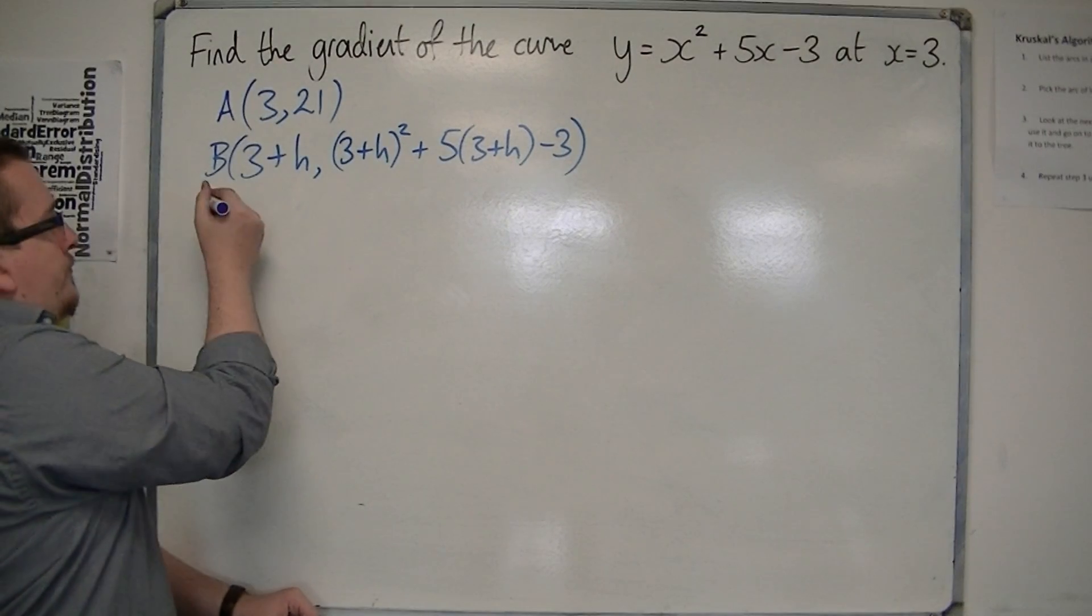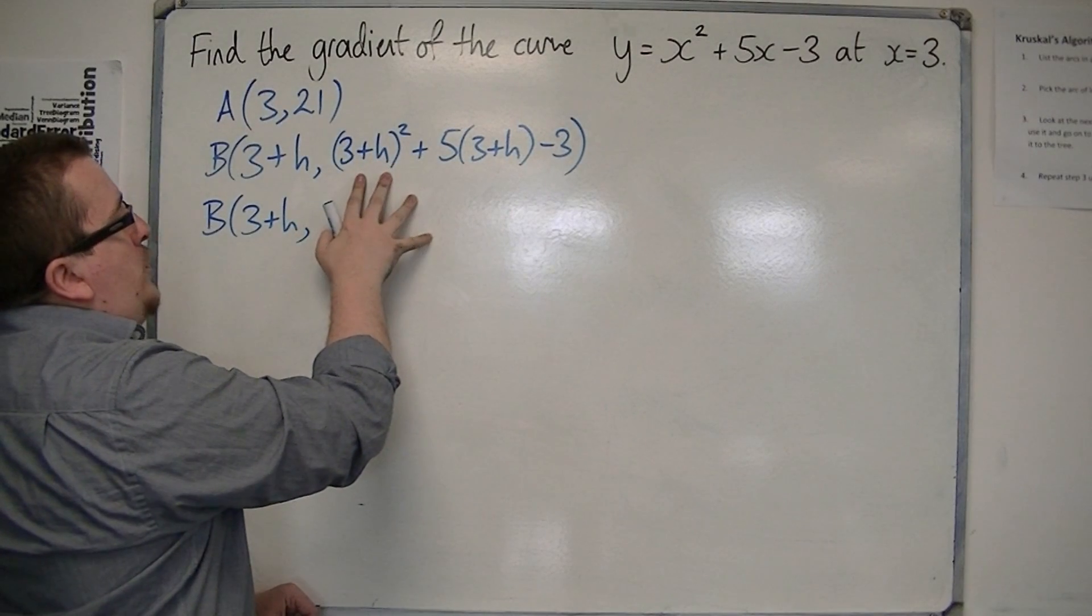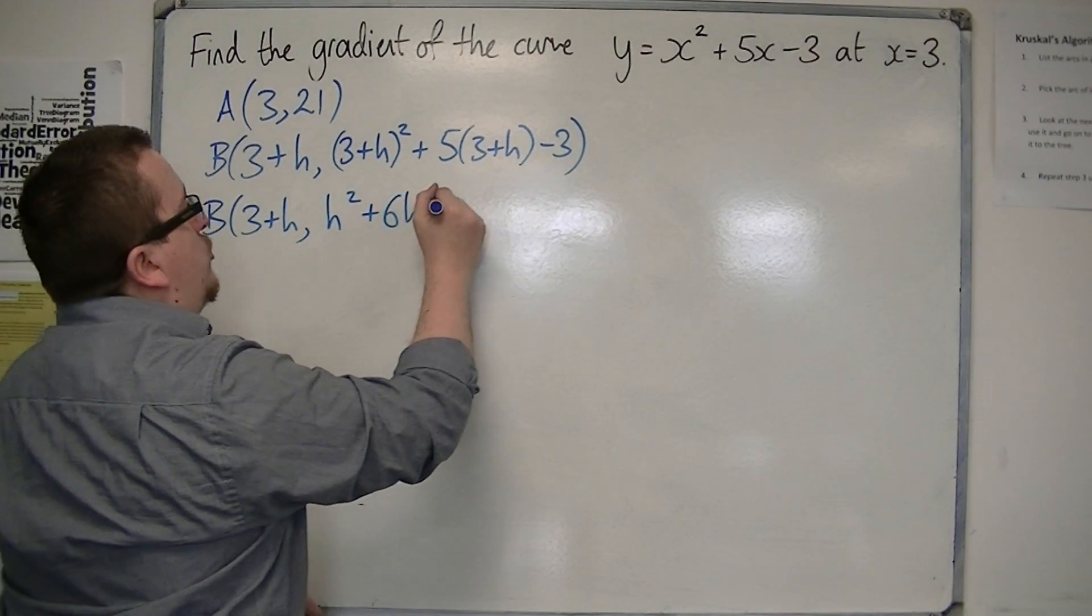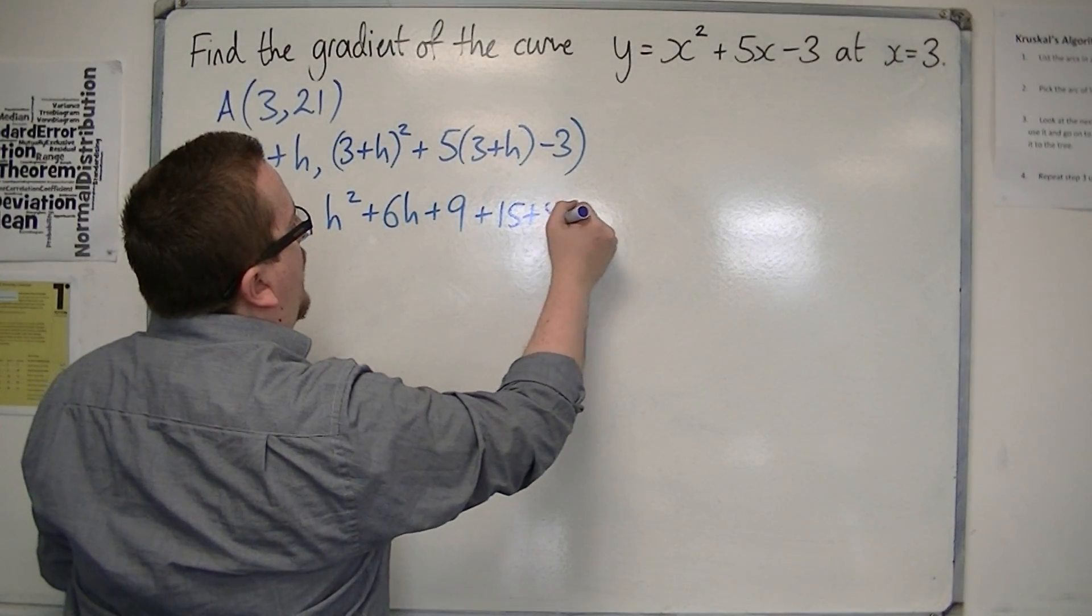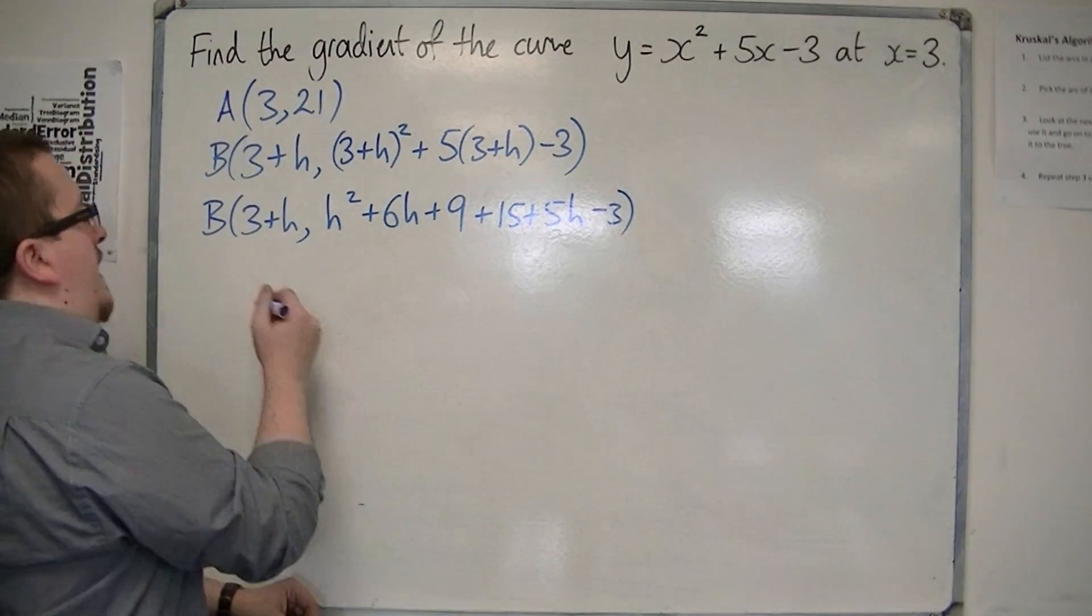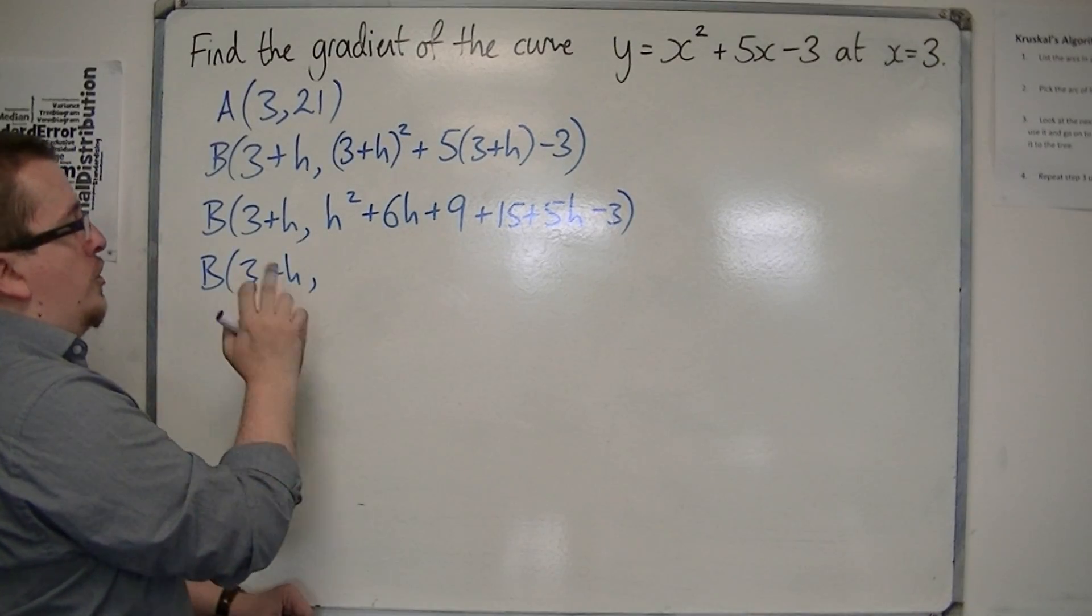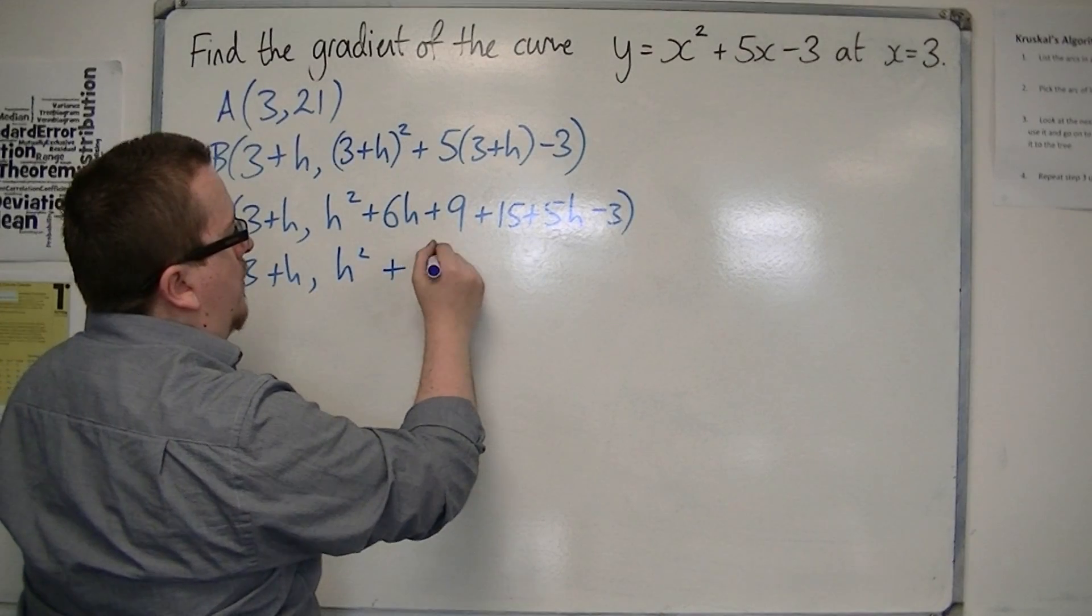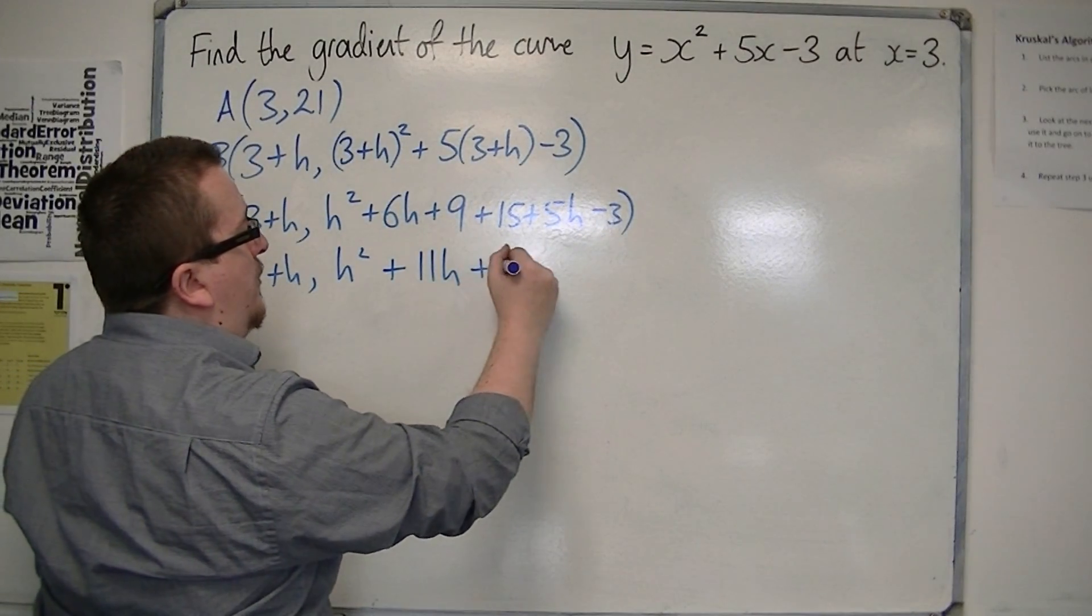So if I do that, then I've got 3 plus h all squared. So I'm going to get h squared plus 6h plus 9. I'm going to get 15 plus 5h from that bracket expanded, and I've got that minus 3 on the end. So finally, I should be able to write B as 3 plus h, comma, h squared. I've got 11h. 9 plus 15 is 24. Minus 3 is plus 21.